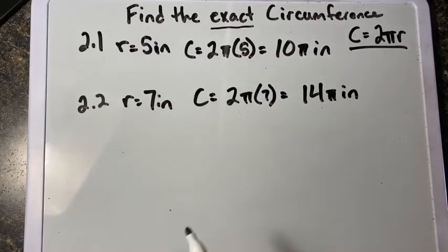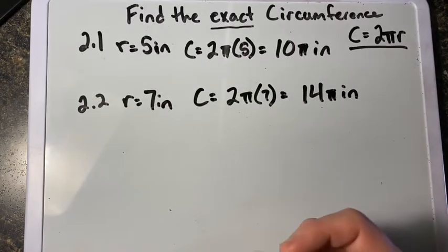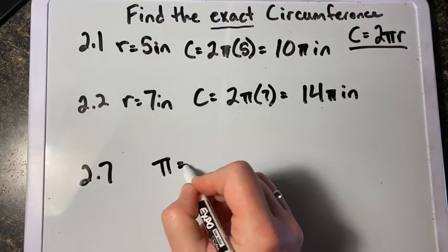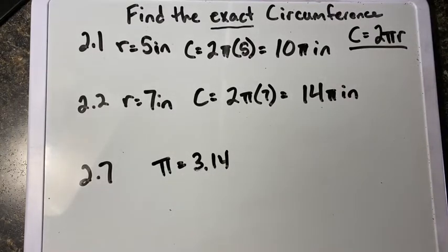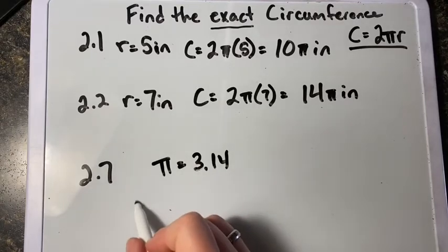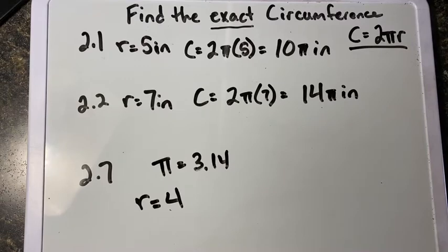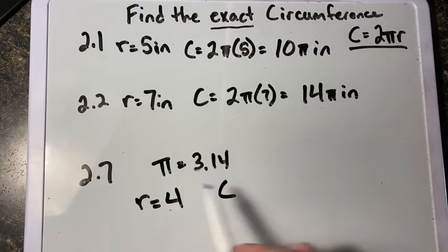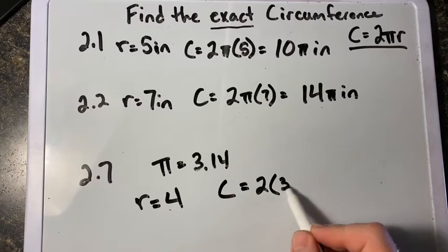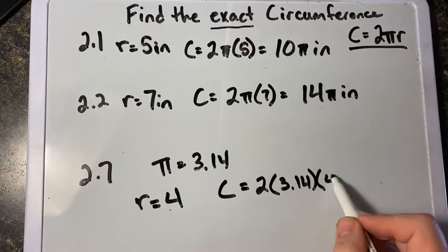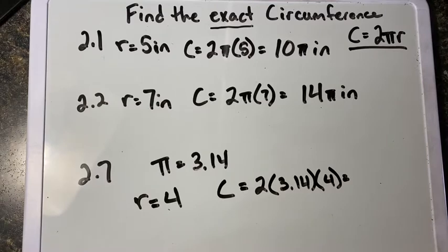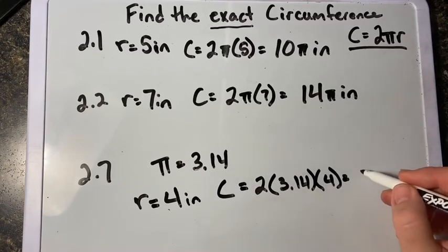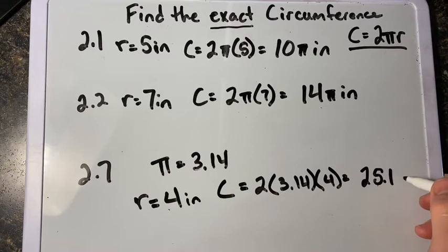If they're not asking for exact, they will give you the value they'd like you to use for π. Looking at problem 2.7, these problems tell us that π equals 3.14. With a radius of 4 inches, we substitute both the radius and π into our formula: circumference equals 2 times 3.14 times 4 inches. Plugging this into our calculator, our circumference is 25.1 inches.